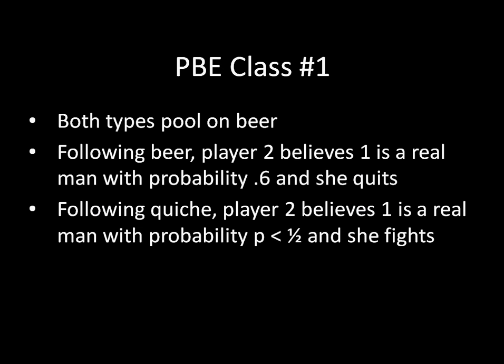This gives us our first class of perfect Bayesian equilibria. Both types pool on beer. Following beer, player two's posterior belief equals her prior belief, and she responds by quitting. Following quiche, player two's posterior belief is any p less than 1/2, and she responds there by fighting. Note that there are infinitely many of these equilibria — any p less than 1/2 works here.